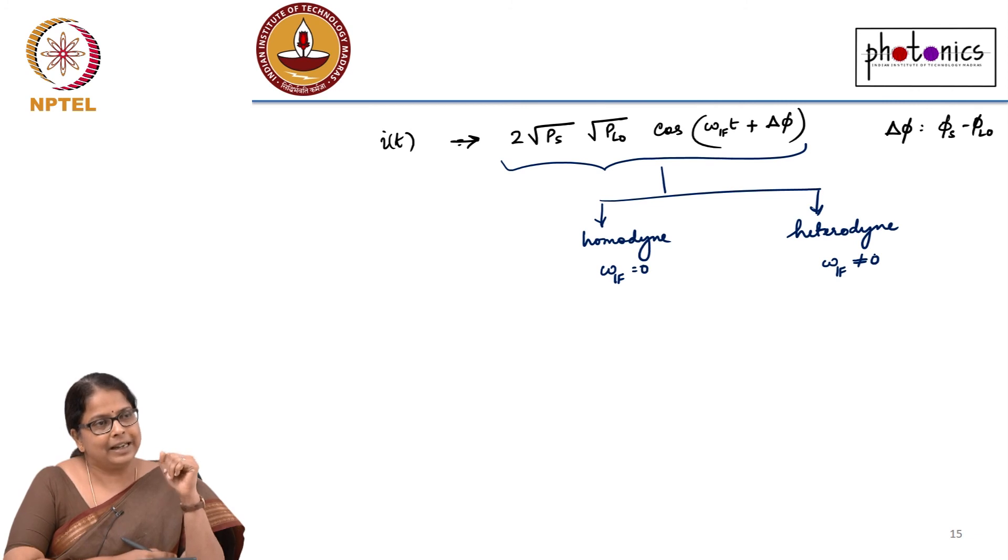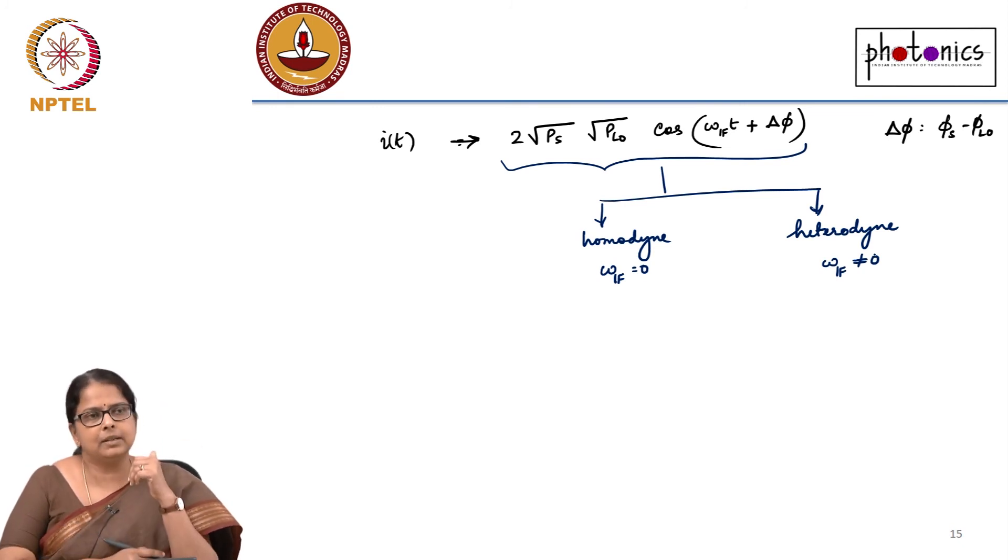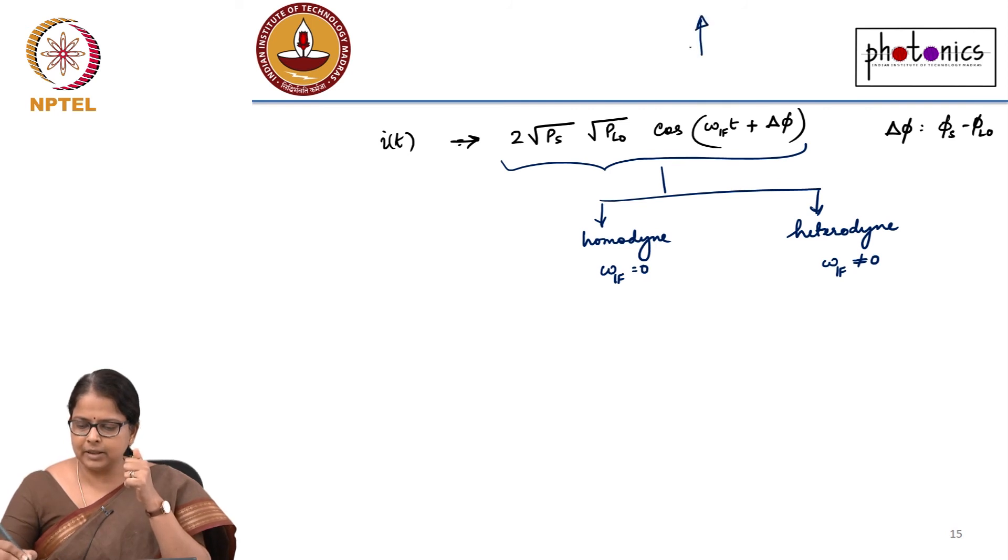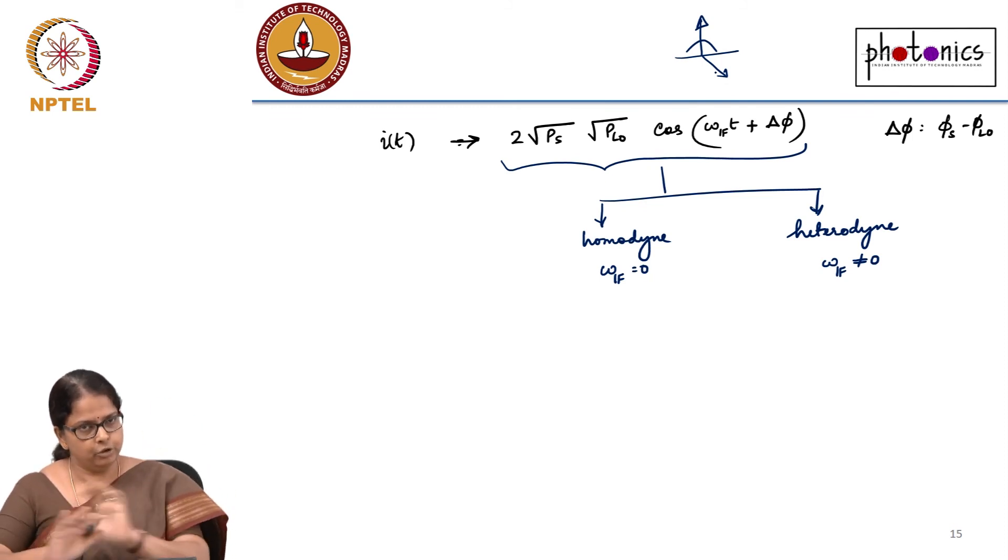But practically, we use heterodyne receivers because it is very hard to get two lasers to oscillate exactly at the same frequency. Another practical way of solving this problem is what is called polarization multiplex transmission, where on the x polarization you put your signal, on the y polarization you do not put a signal. In the x polarization you have data and in the y polarization same frequency. You take the laser, split into two, in one polarization you modulate your signal, the other polarization you do not modulate and then you propagate through the fiber.